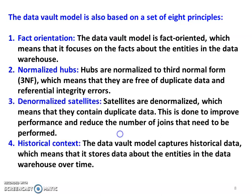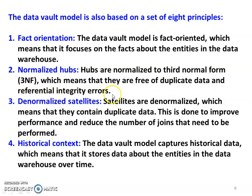The data vault is built on eight basic principles. First, fact orientation — the data vault model focuses on the facts about the entities in the data warehouse. Second, normalised hub — hubs are normalised to third normal form, which means they are free from duplicate data and referential integrity errors. The original data is stored in the normalised hub.